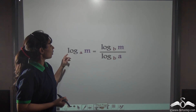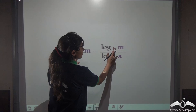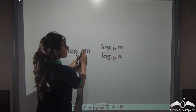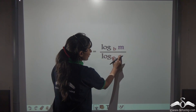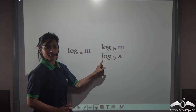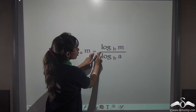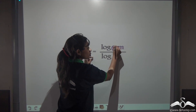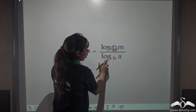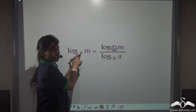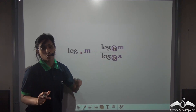Log m to the base a can be changed. The base can be changed to b — whichever base you want — by finding out the log of m to the base b divided by log of a to the base b. Log of m to the base a needs to be changed to log of m to the base b. This is the base which you want, and a is the base which is already given to you. Divided by log of a to the base b, where b here is the base which you want.